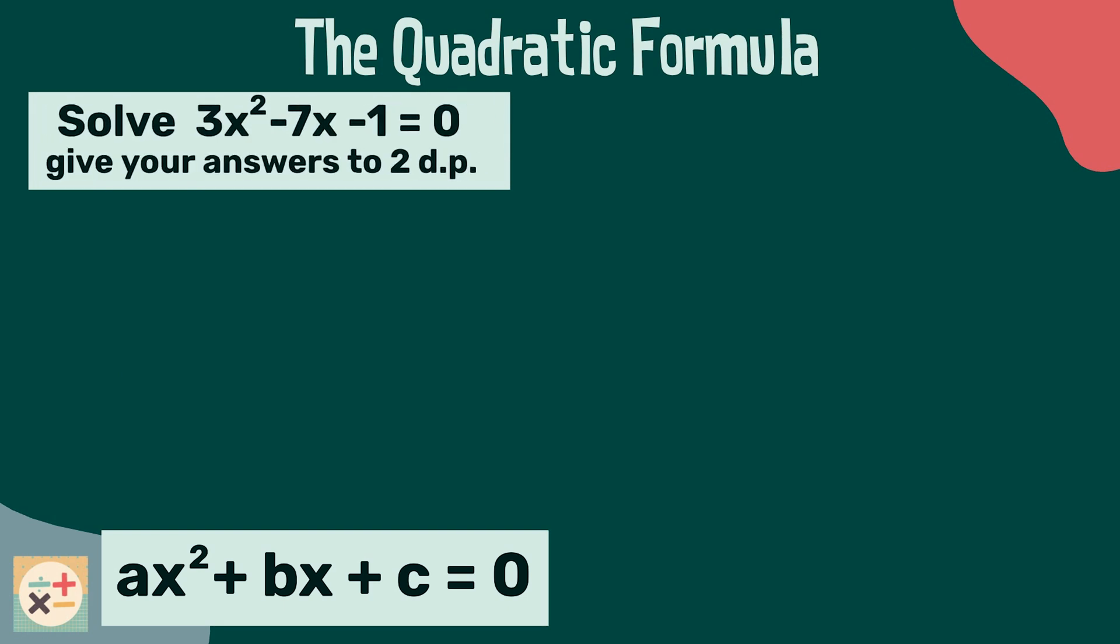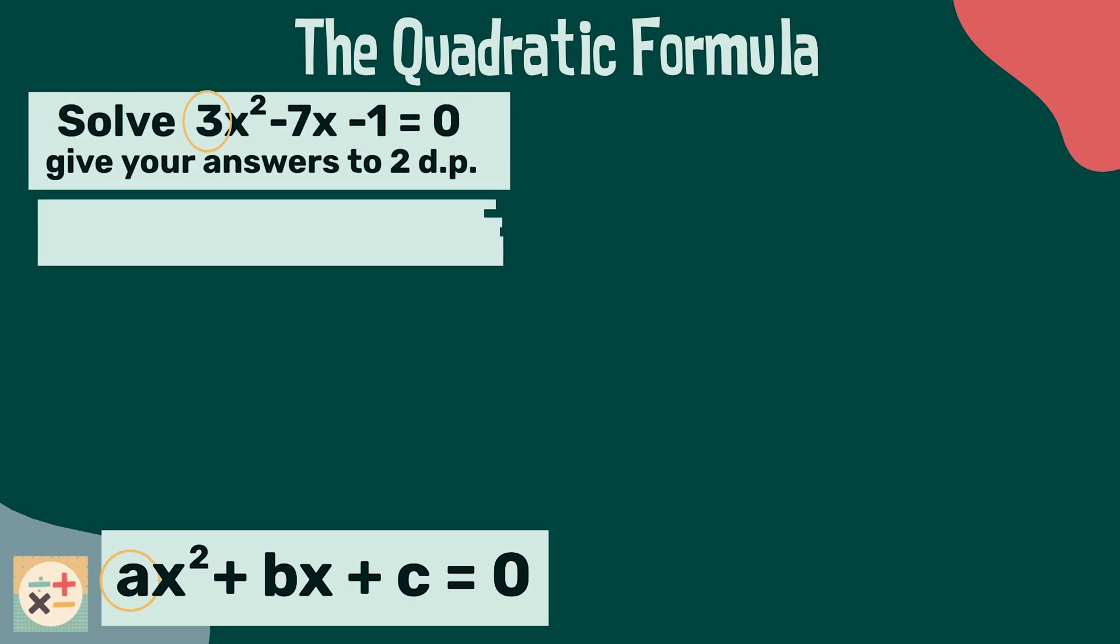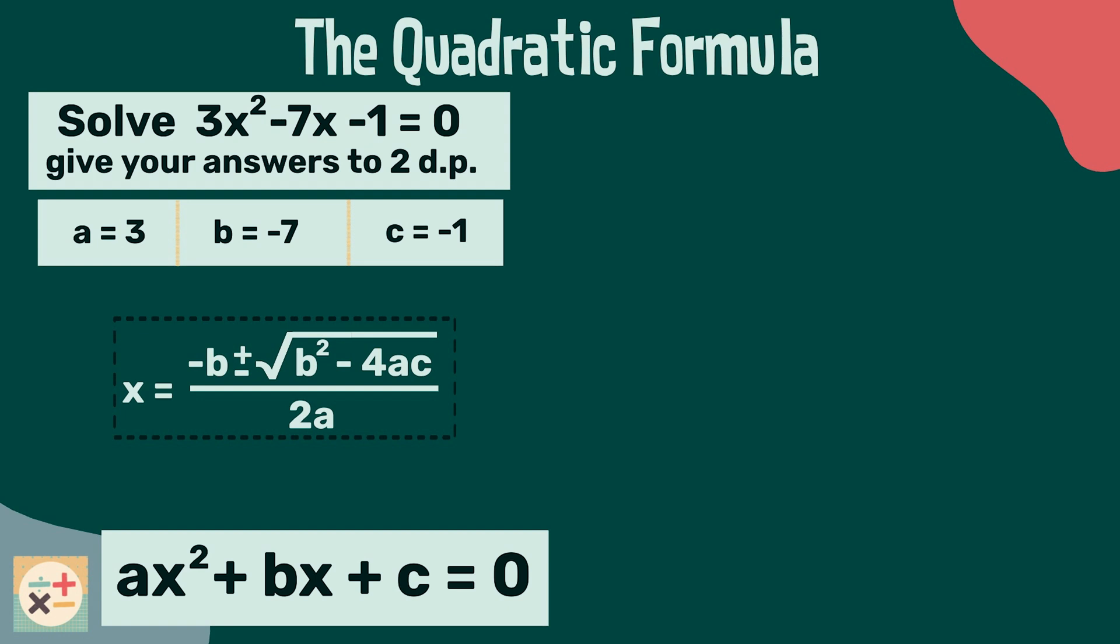Let's identify the terms. Notice that we have two negatives here, minus 7 and minus 1. Make sure to include the minus signs when making a note of the values and substituting them in. Now let's substitute these values into the quadratic formula.